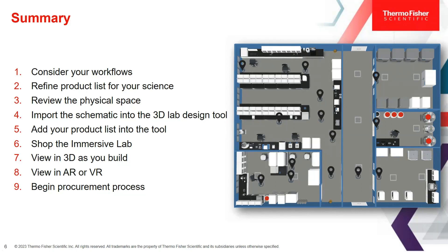In summary, the steps you would take are: consider your workflows and build your product list or wishlist with workflows in mind; review the physical space that you've been given to use and load that into the 3D lab design tool; add your products into the tool after setting up the foundational elements. If you're not sure where to start, or feel like you may have missed something, schedule a visit to our immersive lab and our specialists will help walk you through products in more detail and give you a sneak peek at how things could look in your lab. Then go back to the tool, make adjustments, view it in 3D, and view it in AR or VR.